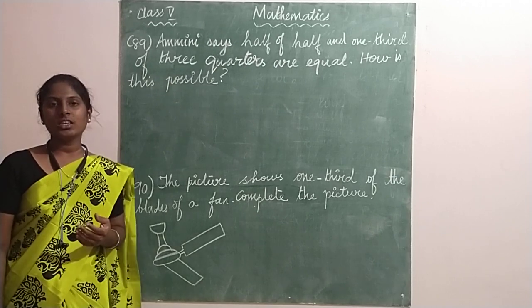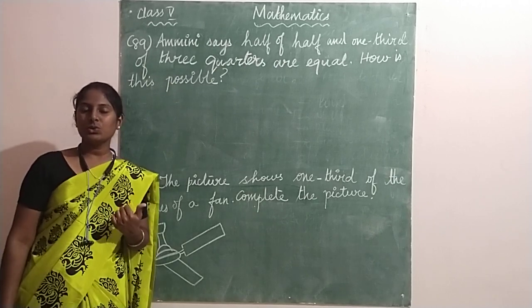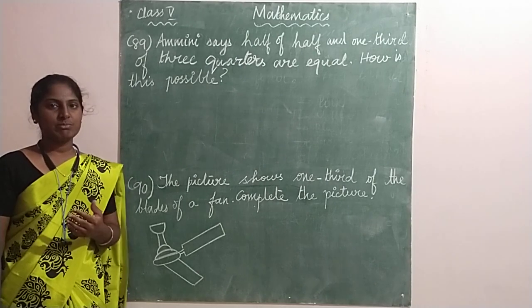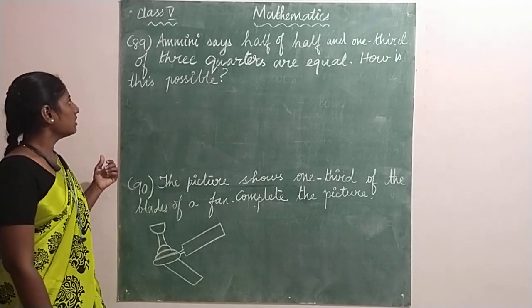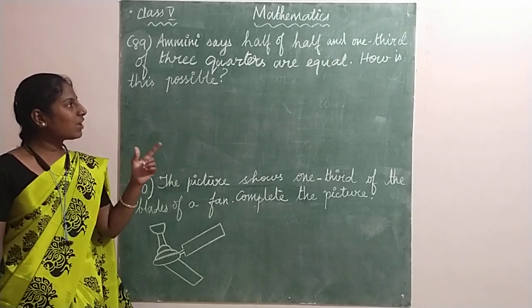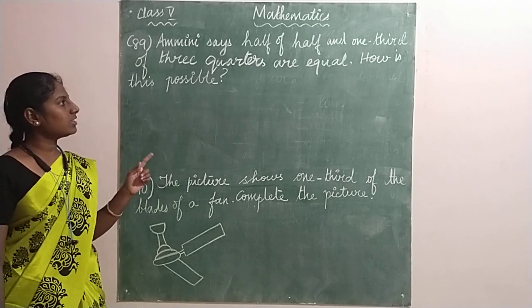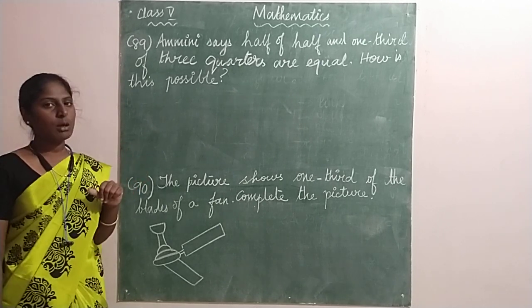Hello dear children, good morning. In today's class we are going to discuss a few interesting problems. Look at the question here. Amini says half of half and one third of three quarters are equal. How is this possible?